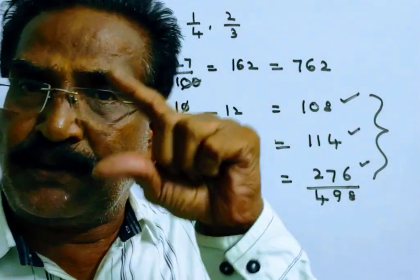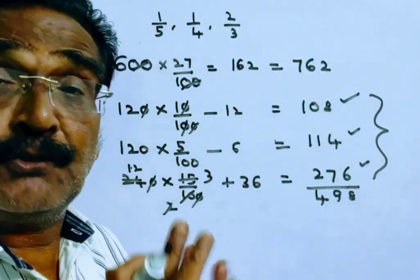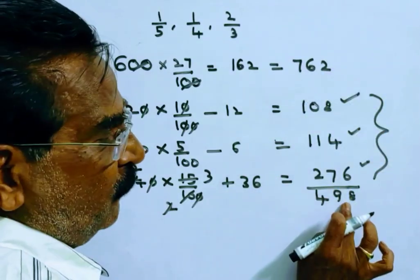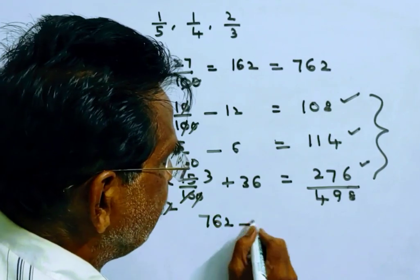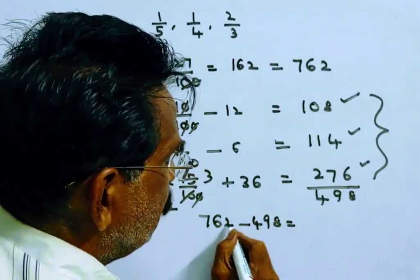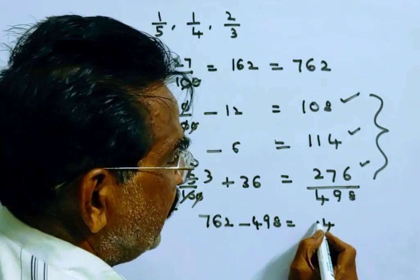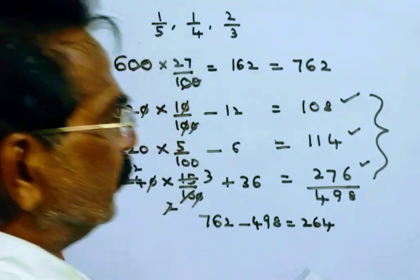Now the balance he has to realize, the balance amount he has to realize to get 762 profit is 762 minus 498. That is equal to 12 minus 8 equals 4, 15 minus 9 equals 6, 6 minus 4 equals 264 rupees.